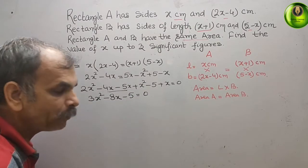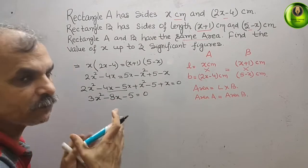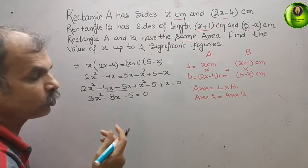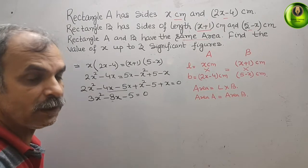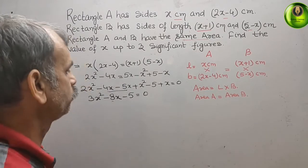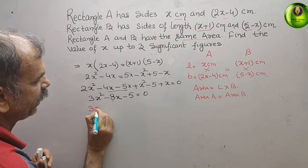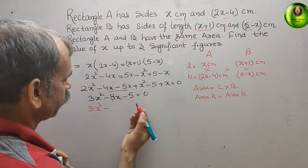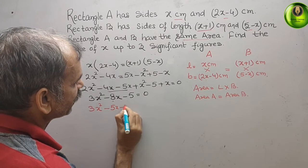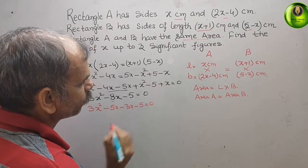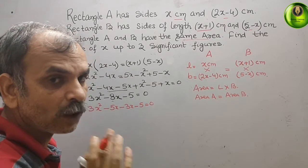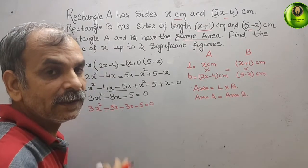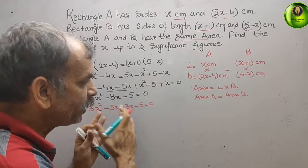Now, can we go for middle term splitting? 3 into 5 is 15. We need two numbers that multiply to 15 and add to 8. Checking: 3 into 5 is 15, but the numbers 1, 2, and 3 don't work cleanly. That means it cannot be solved by middle term splitting.